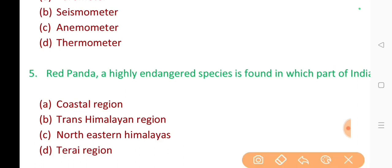5. Red panda, a highly endangered species, is found in which part of India? The correct answer is option C. Northeastern Himalayas.